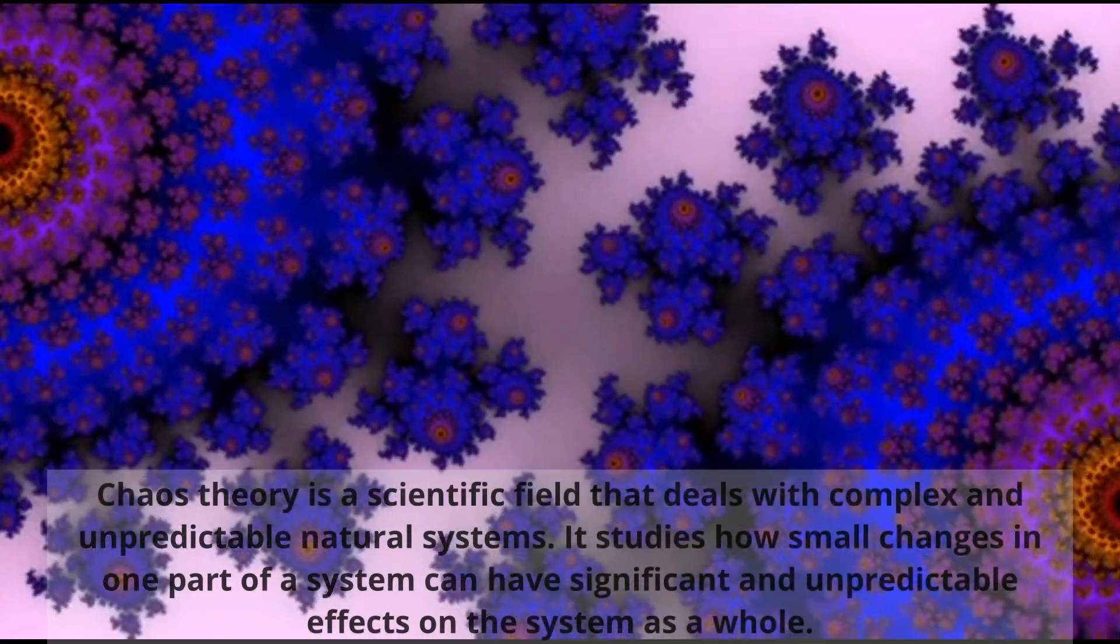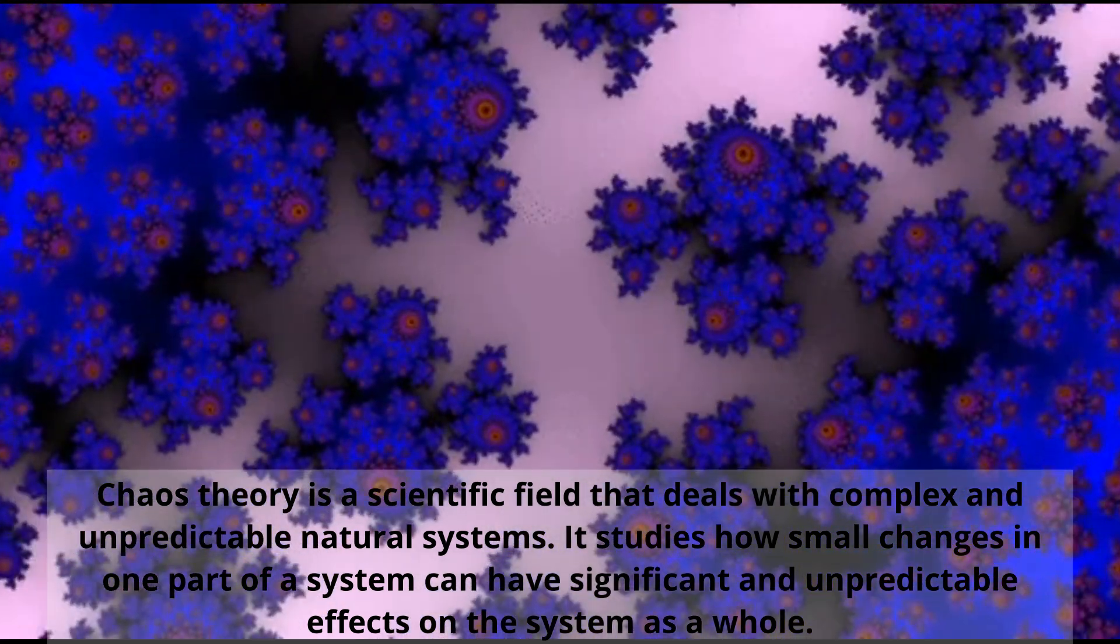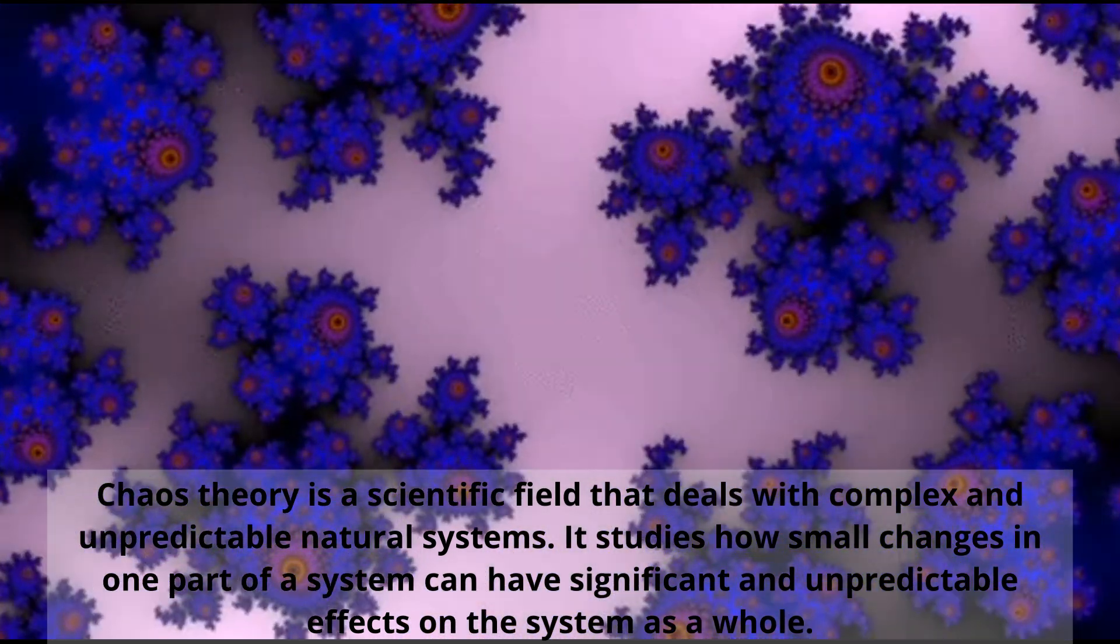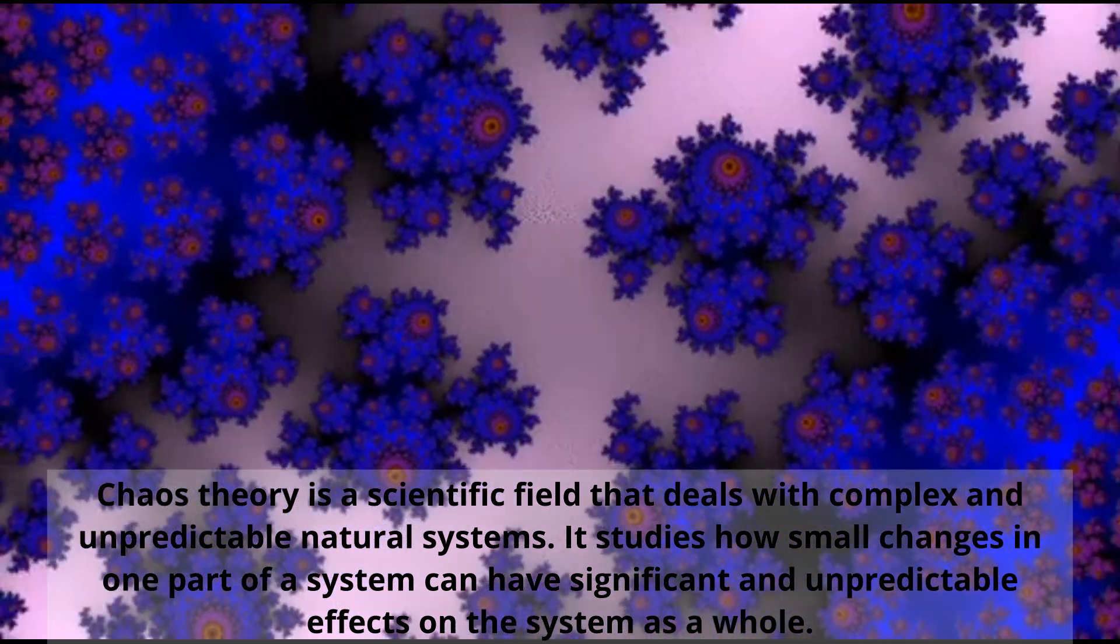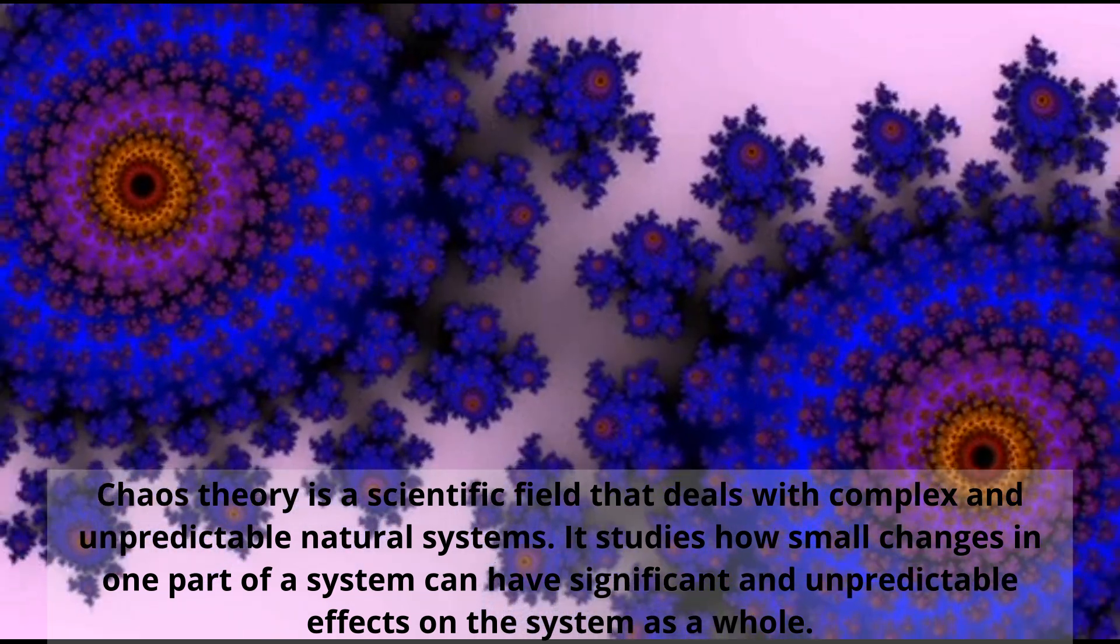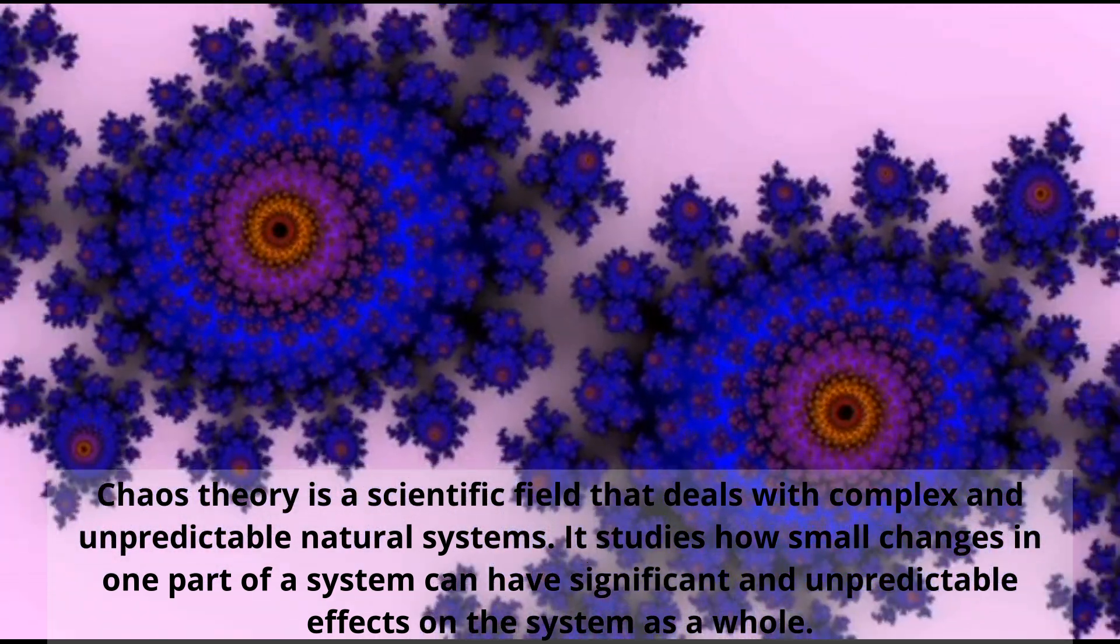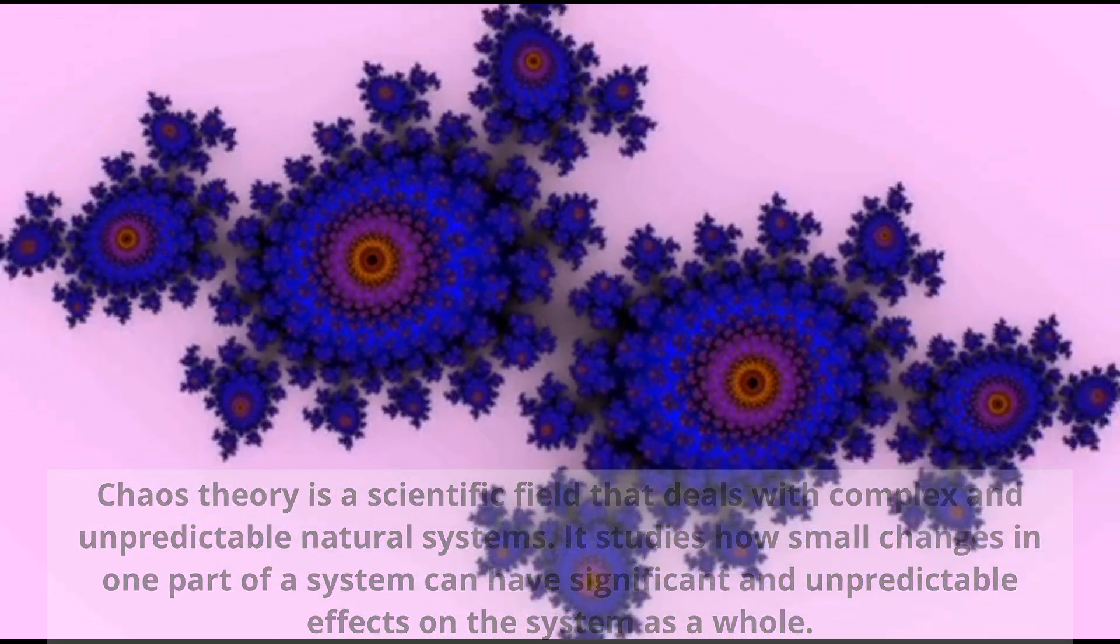In summary, chaos theory is a scientific field that deals with complex and unpredictable natural systems. It studies how small changes in one part of a system can have significant and unpredictable effects on the system as a whole.